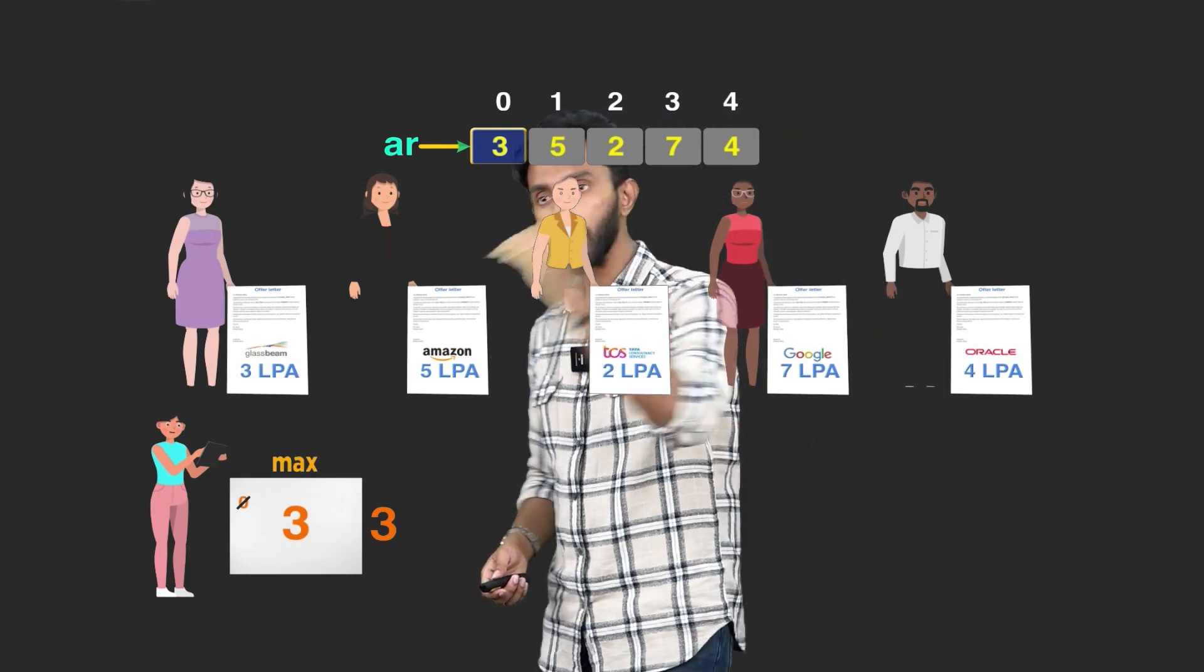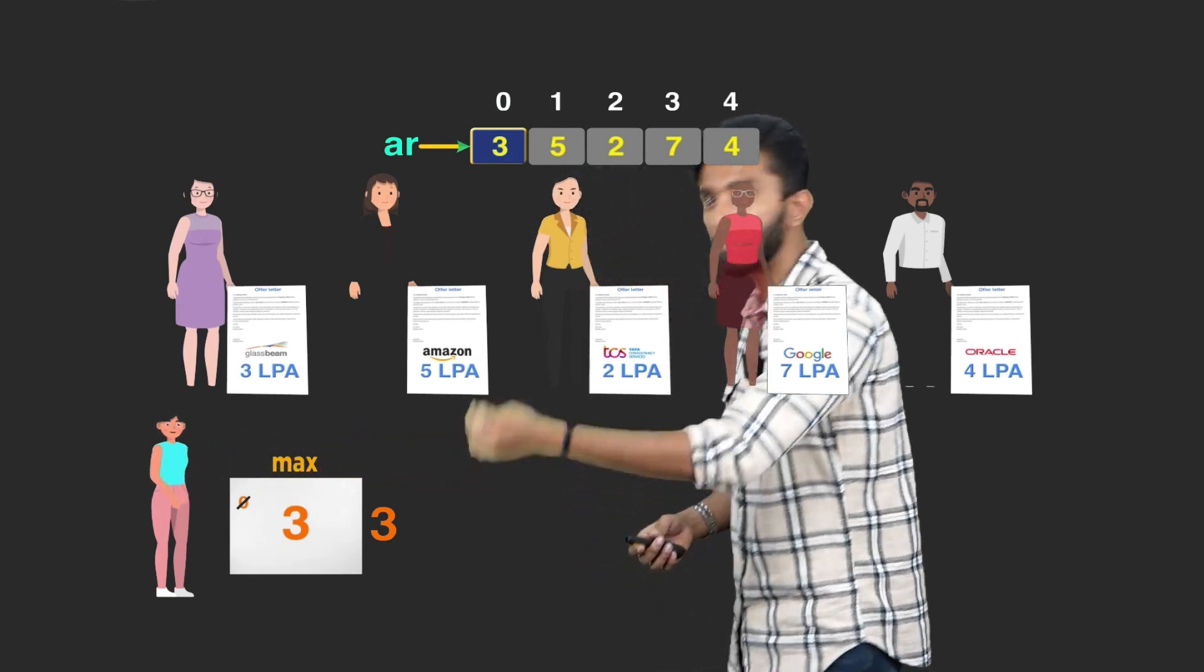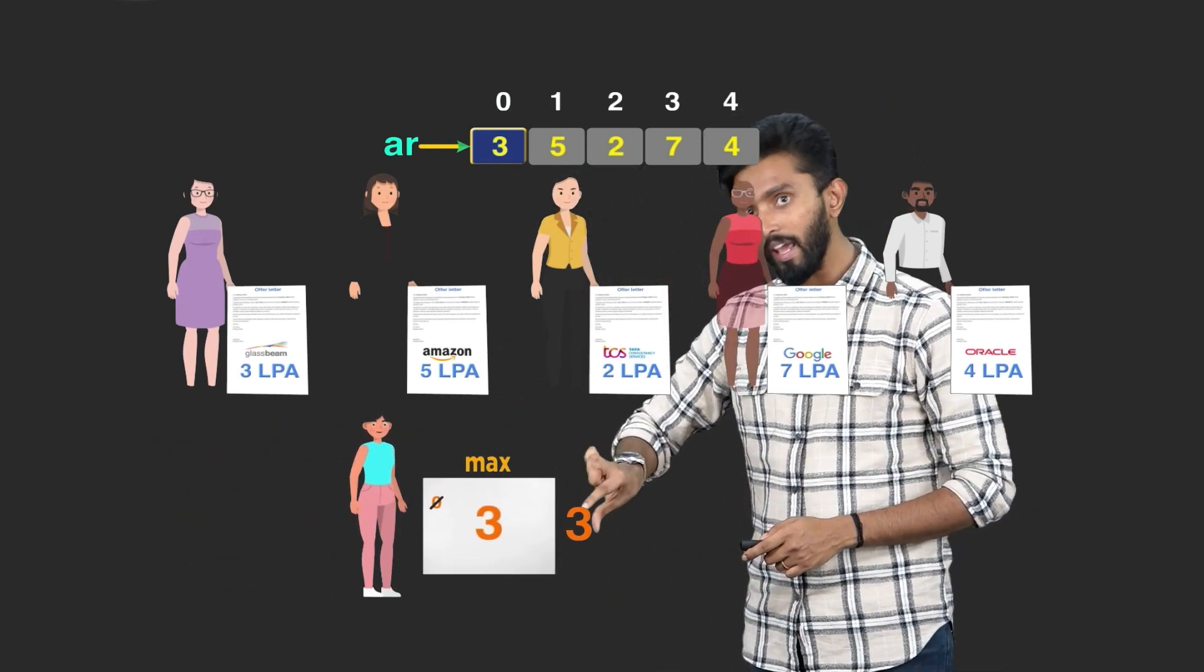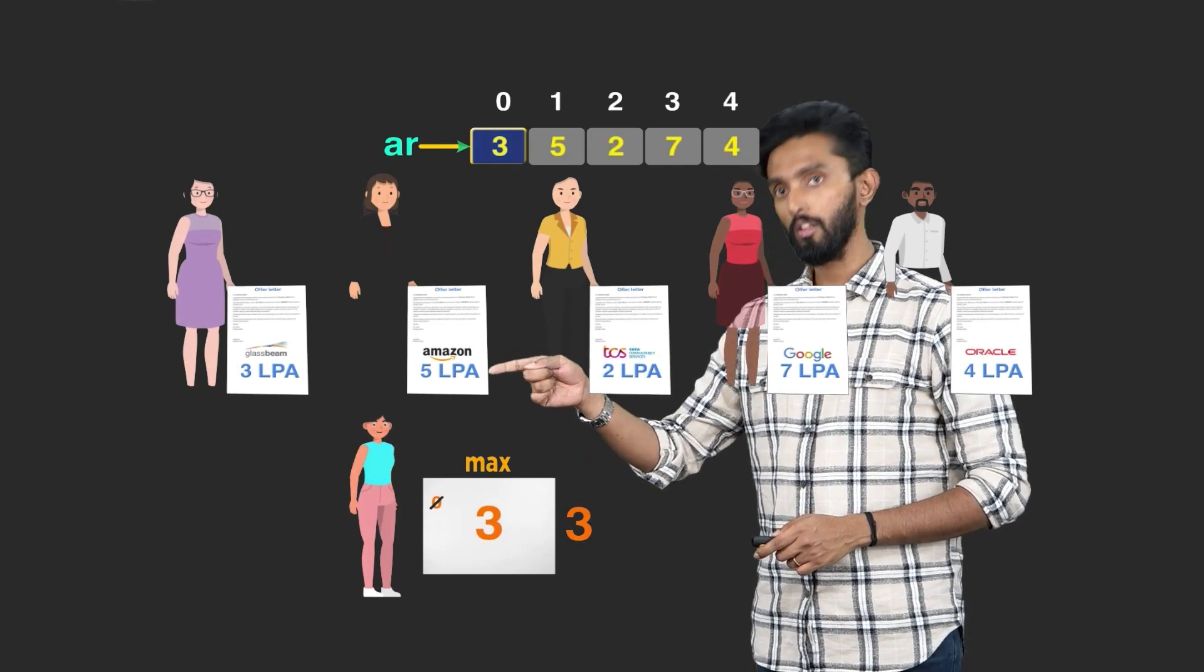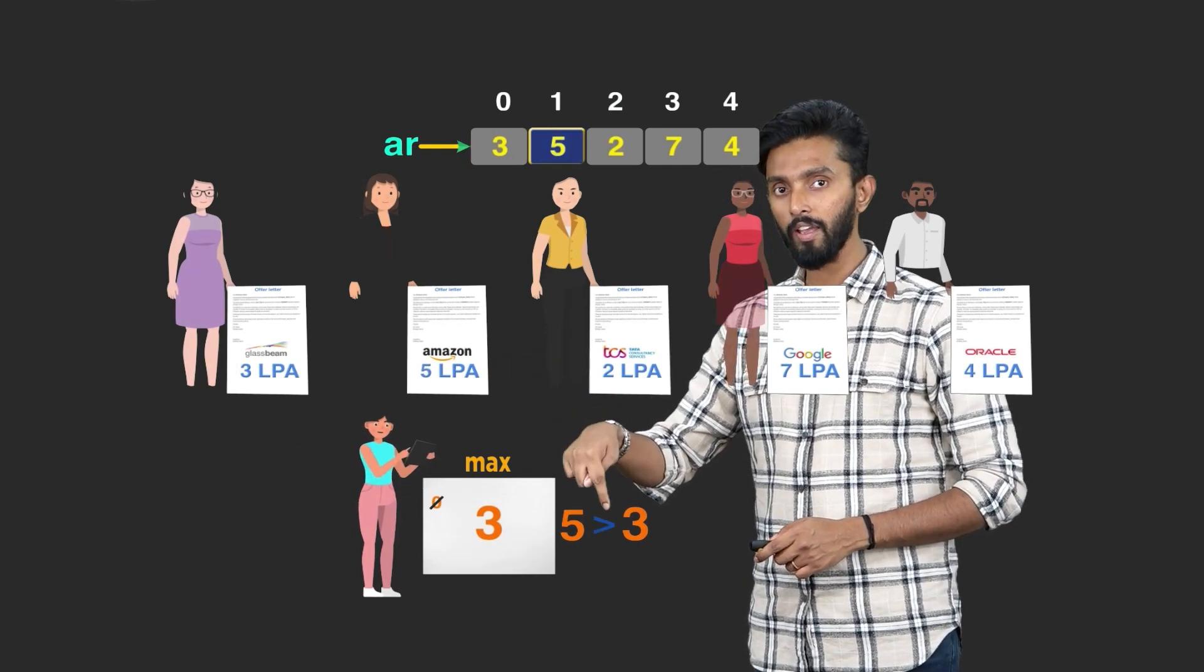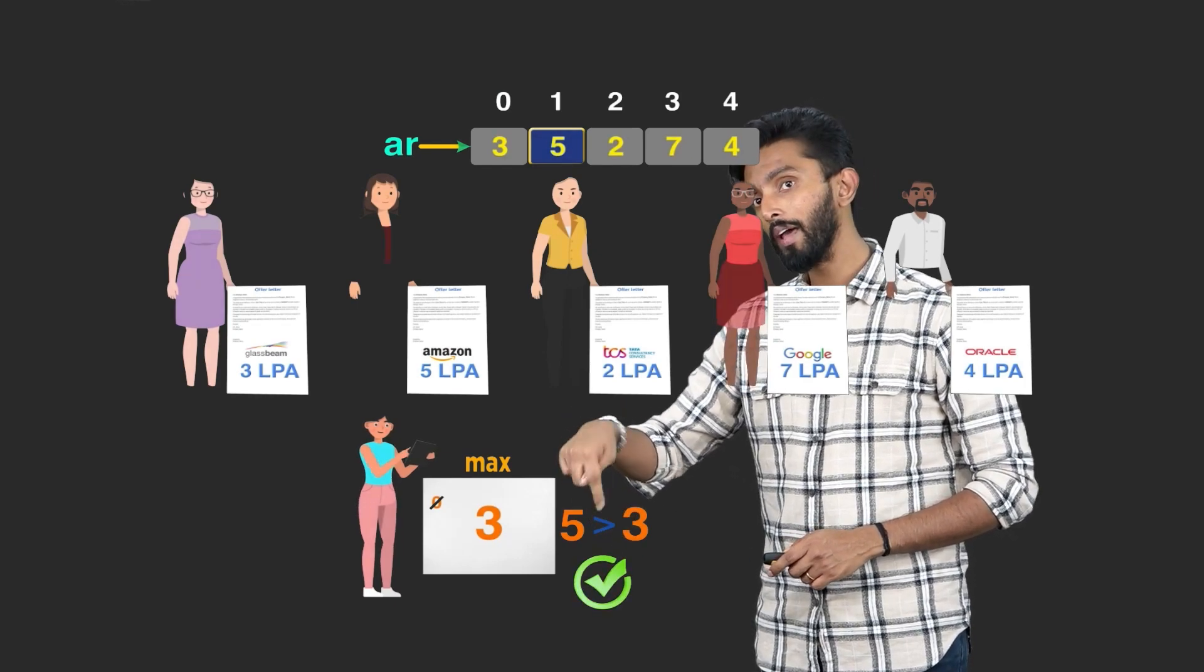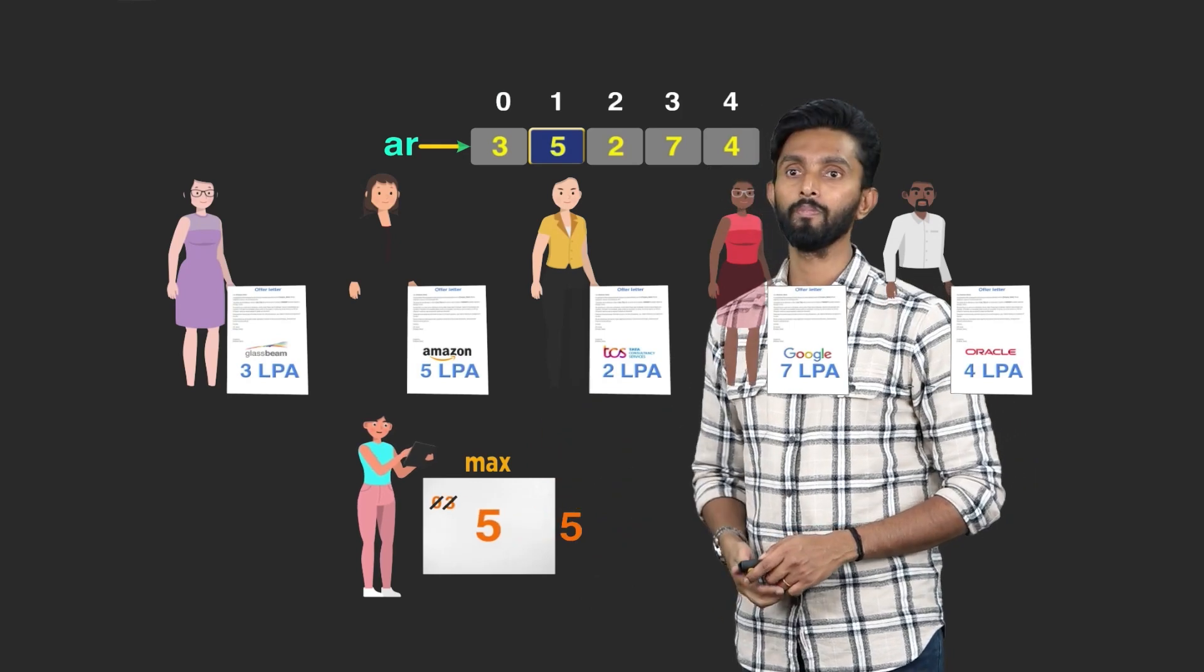Tell me, is 3 LPA greater than 0 or not? Yes. If it is greater, then you take that person's package and put it inside Max. So, 0 gets replaced by 3. Now, what is the maximum? 3. But we have many more people to compare. So, I will say, move on to the next person. Now, I will be like, now take your value, compare it with this person's package. This is 5, this is 3. Is 5 greater than 3? Yes. Which means, now the maximum is 5. So, I will be like, replace 3 with 5.